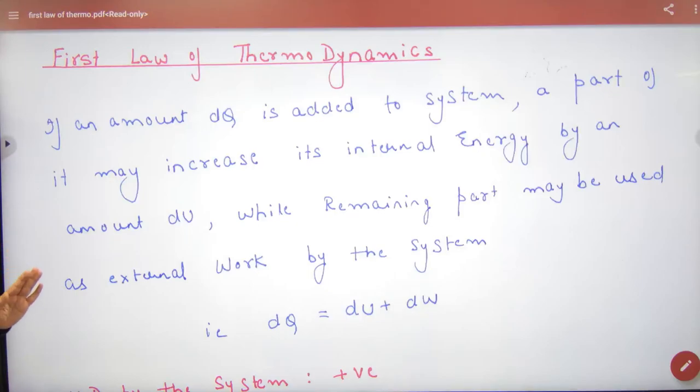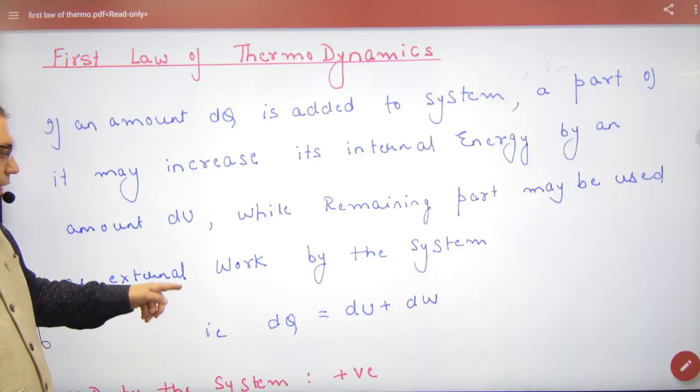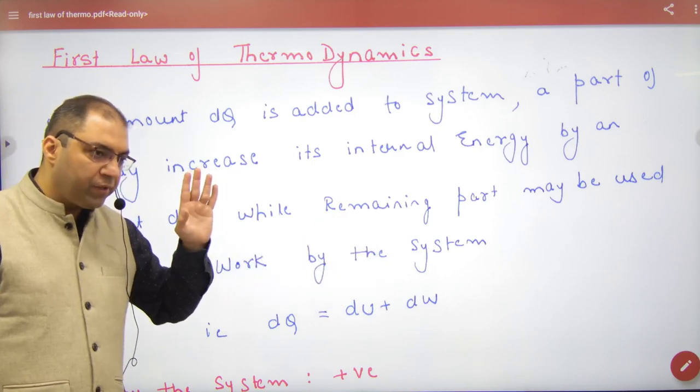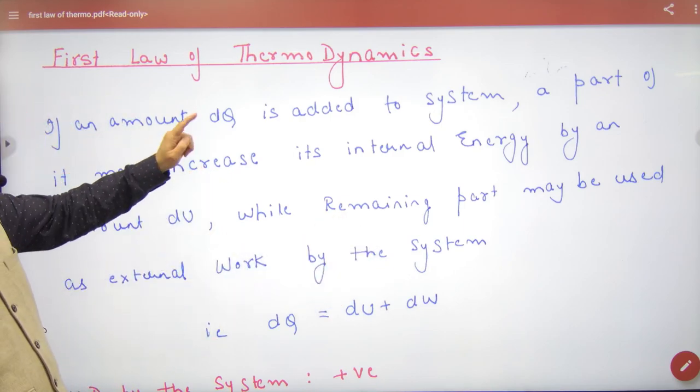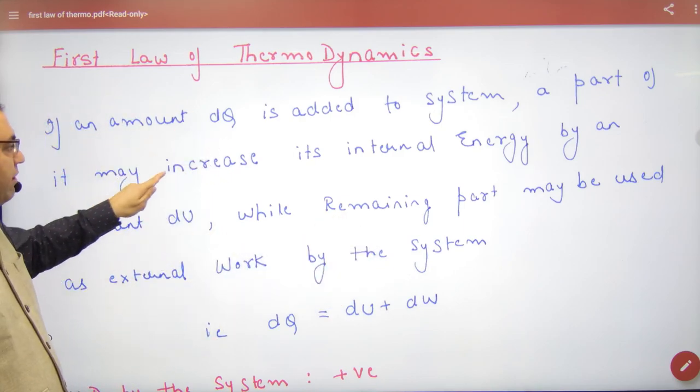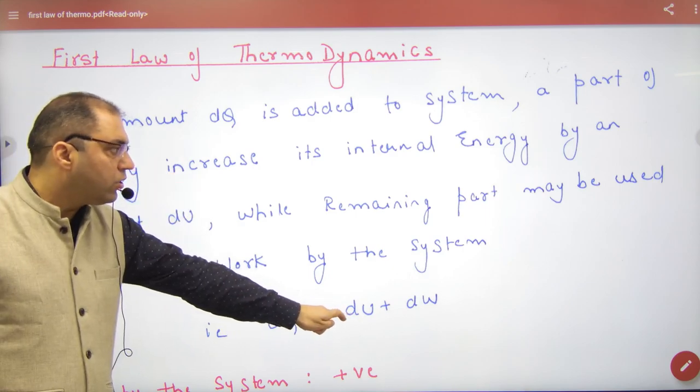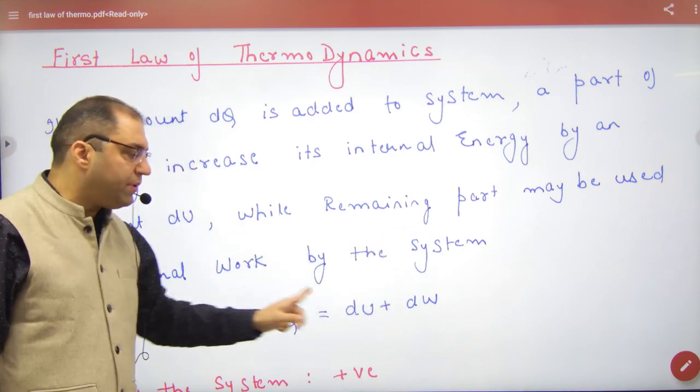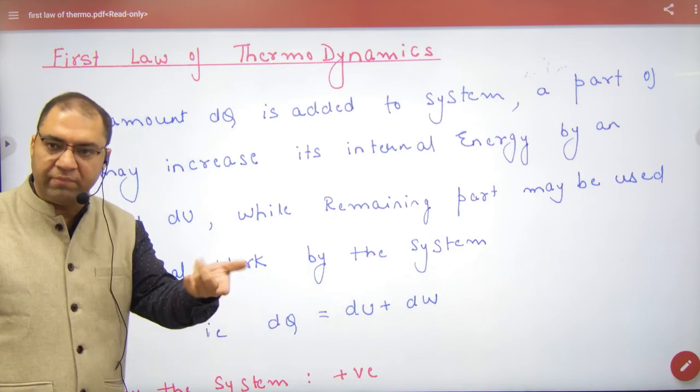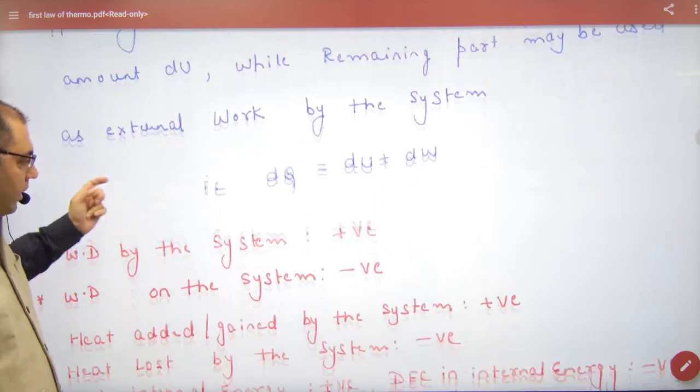First law of thermodynamics: dq equals du plus dw. If some amount dq is added to our system, part of it may increase the internal energy, and the remaining part may be used to do work on the piston. We have done this.